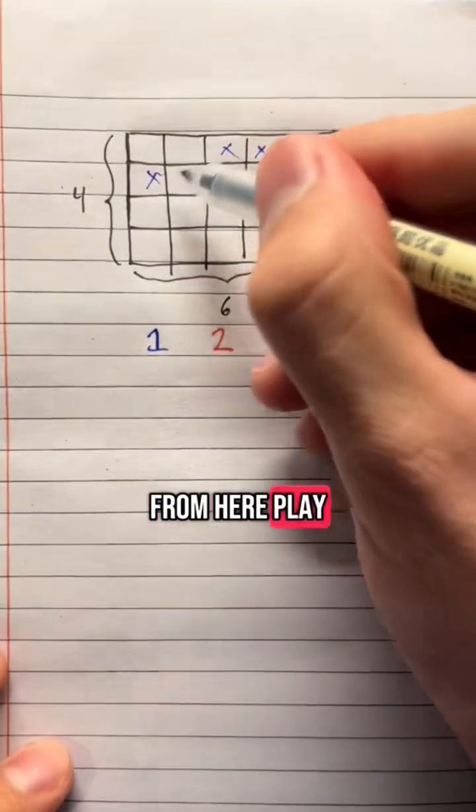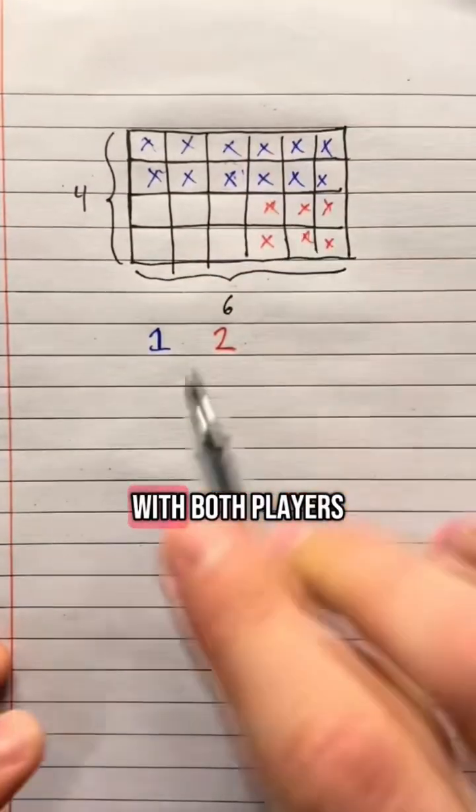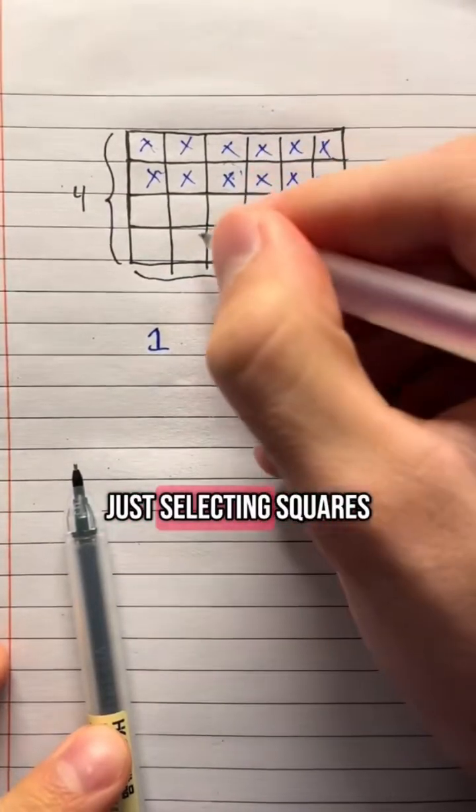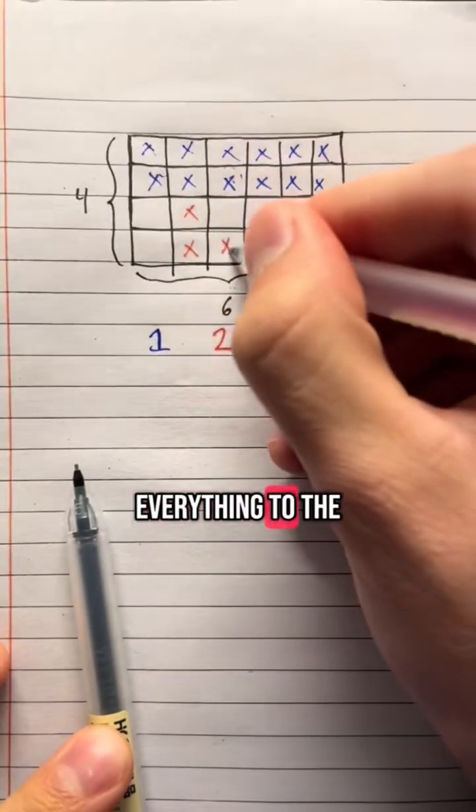From here, play continues in this way with both players just selecting squares and then removing everything to the right and above.